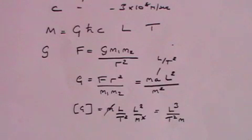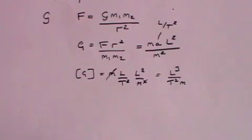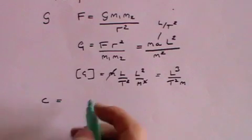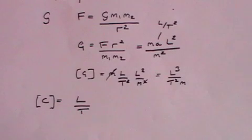And cancelling out this m for one here, you get that that is l-cubed over t-squared m. So what we are saying is that the dimensions of the gravitational constant G are represented by an l-cubed, a length-cubed term, divided by time-squared multiplied by a mass. Now let's think about the speed of light, c. That's actually very simple. c is measured, as it is a velocity, in terms of meters per second. And dimensionally, that is simply a length divided by a time. So that one was very easy.